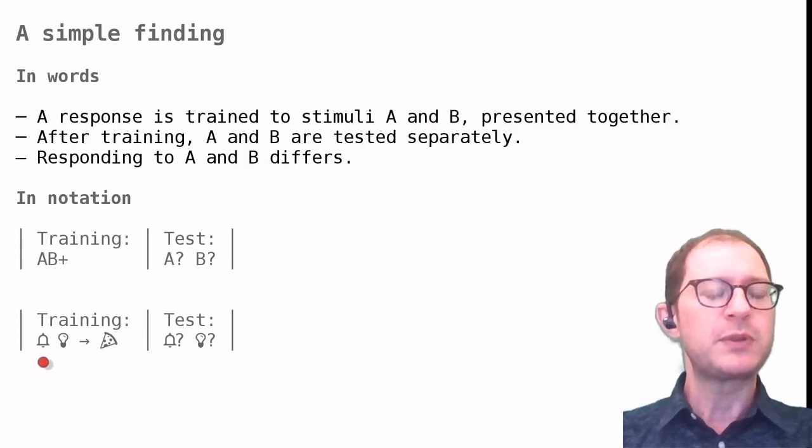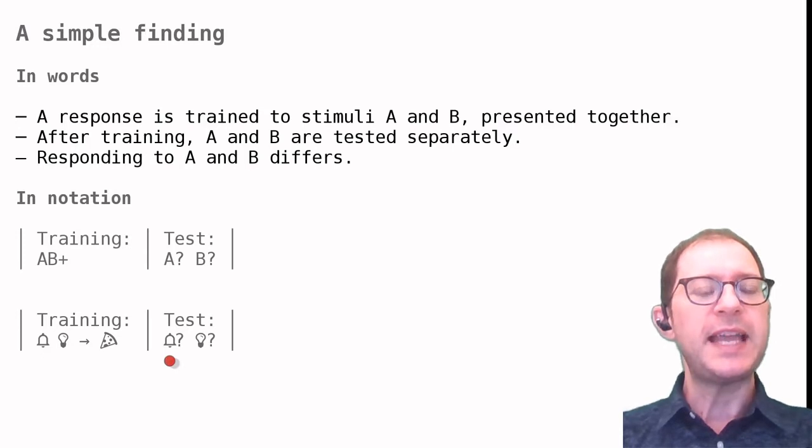Or, if we want to use cuter symbols, we can have, for example, a sound and a light followed by food, symbolized by the usual pizza slice, and then at the test the bell and the light are presented separately.